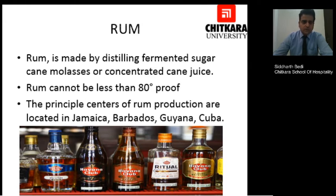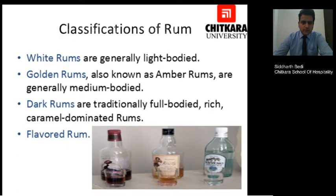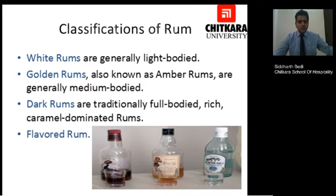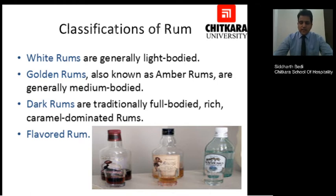Cuban rums are world famous. Moving forward to classification: white rums are usually light-bodied. Then we have golden rums, also known as amber rums, which are medium-bodied. Then dark rums which are traditionally rich, caramel-dominated rums. And there is a new trend known as flavoured rums, made in countries like Sweden, in which various ingredients are added to impart flavour — like fruits or herbs — depending upon the distillery making that particular spirit.